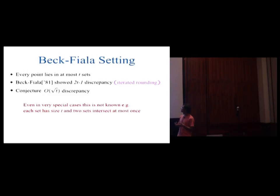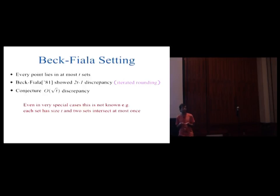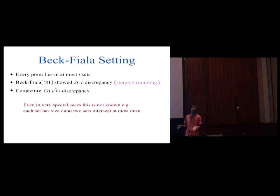Beck and Fiala showed that for these set systems, there is always a colouring of discrepancy 2t minus 1. This is already a surprising fact because this bound of 2t minus 1 does not depend on how many points or how many sets you have. Even though every point lies in a few sets, some sets can be large — you can even have sets which contain almost all the points — and even these big sets will only get a discrepancy of 2t minus 1.